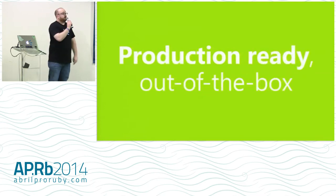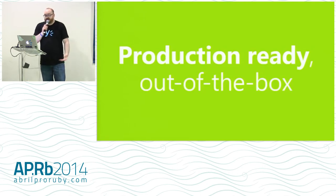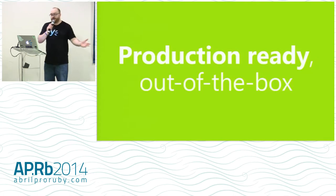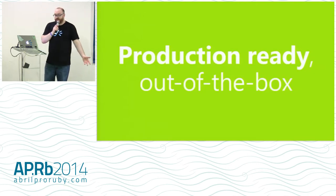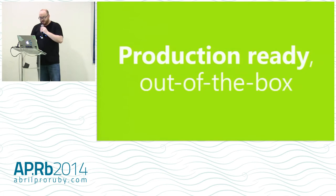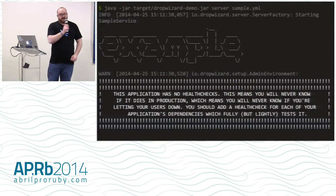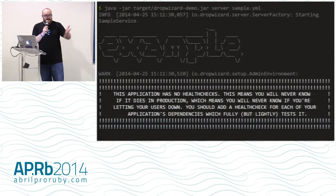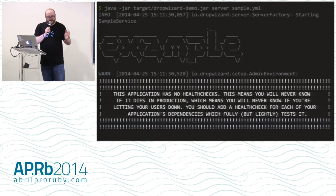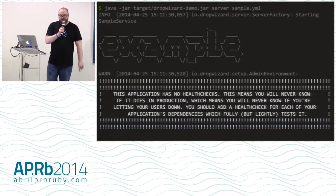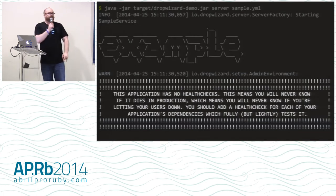One key difference I want to talk about is this claim: 'production ready out of the box.' This stands mostly true for Yammer — when we build a new Dropwizard service it's pretty much ready to go to production. There's a set of conventions that make services ready and easy to deploy. When you start up a simple Dropwizard app, there's a huge warning at the bottom that says: 'This application has no health checks. This means you will never know if it dies in production, which means you will never know if you're letting your users down. You should add a health check for each of your application's dependencies.'